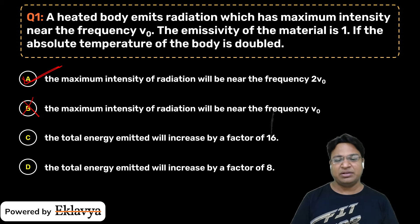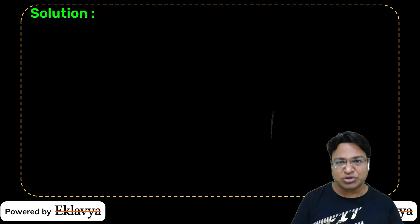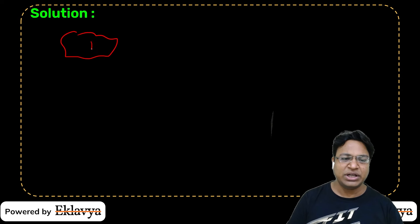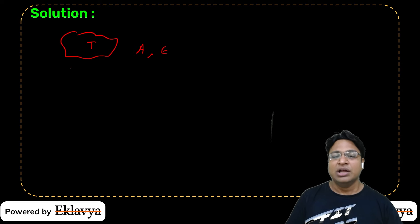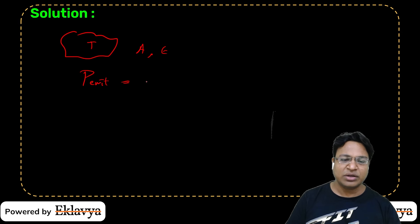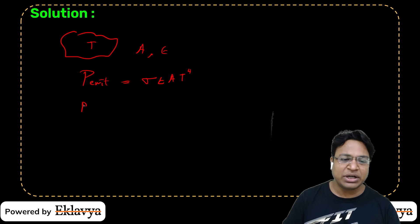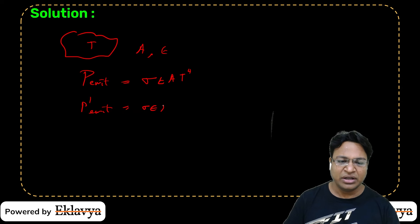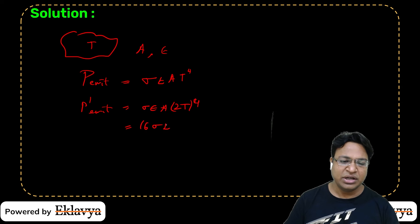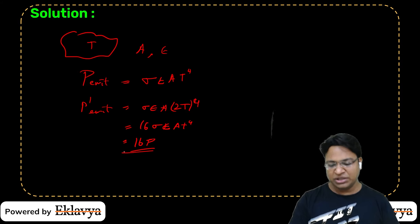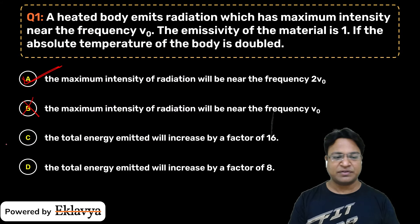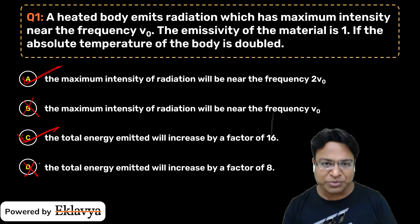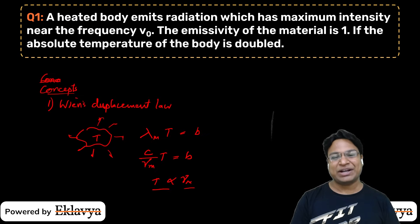The next option: the total energy emitted will increase. The concept here is that for a body with temperature T, area A, emissivity ε, the emitted power is P = σεAT⁴. If we double the temperature, the power becomes 16 times the previous power. So the total energy emitted will increase by a factor of 16 — that will be the correct option. The D option will be wrong. So options A and C are correct.